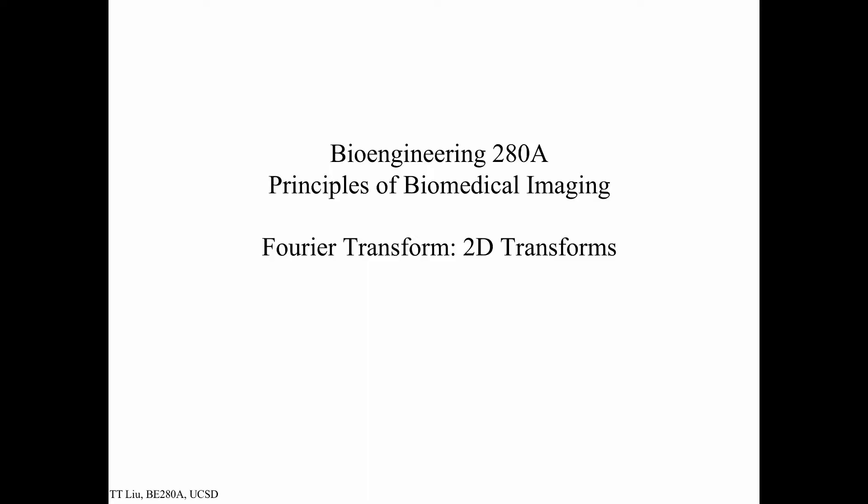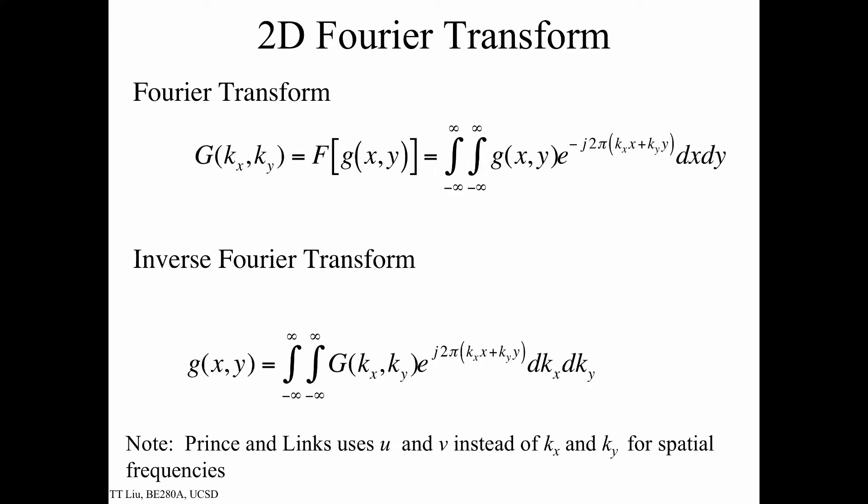In this module, we're going to review the basic definition of the 2D Fourier transform. The 2D Fourier transform has a similar structure to the 1D Fourier transform. The main difference is that now we have integration over dx and dy. In this case, we're going to be considering functions of form g of xy, so spatial functions.